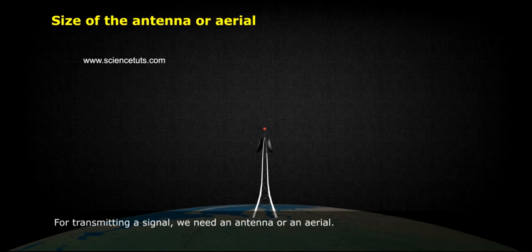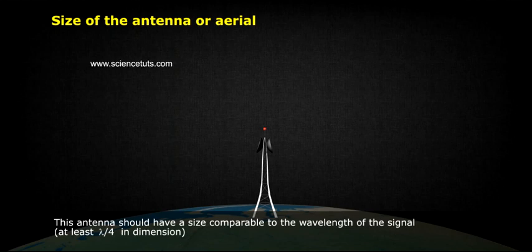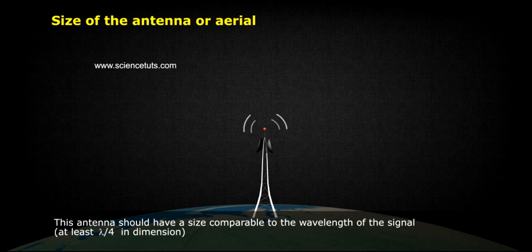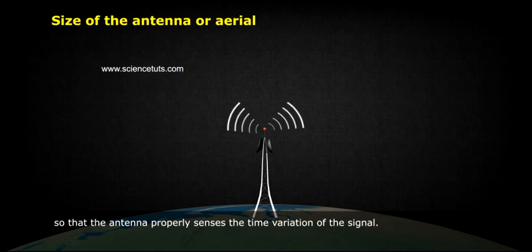Size of the antenna or aerial. For transmitting a signal we need an antenna or an aerial. This antenna should have a size comparable to the wavelength of the signal, at least λ/4 in dimension, so that the antenna properly senses the time variation of the signal.